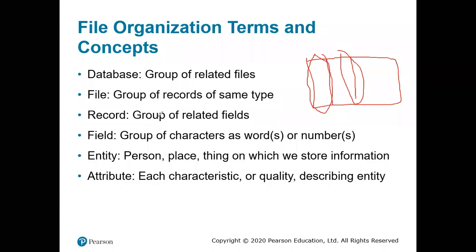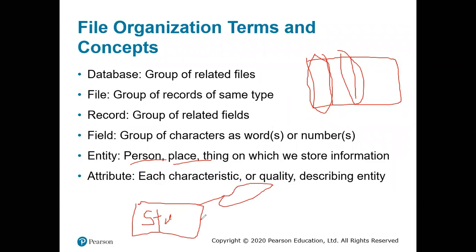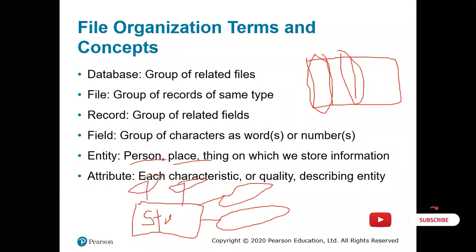An entity is a person, place, or thing for which we store information — for example, a student. We represent an entity with a rectangular box labeled 'Student.' The student entity has attributes like a university ID, a name, and courses. These attributes are represented with oval shapes, while the rectangular shape is the entity. Keep this difference in mind.